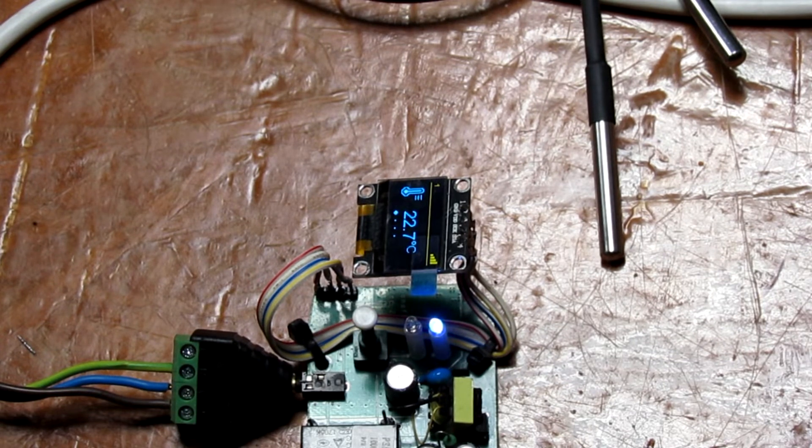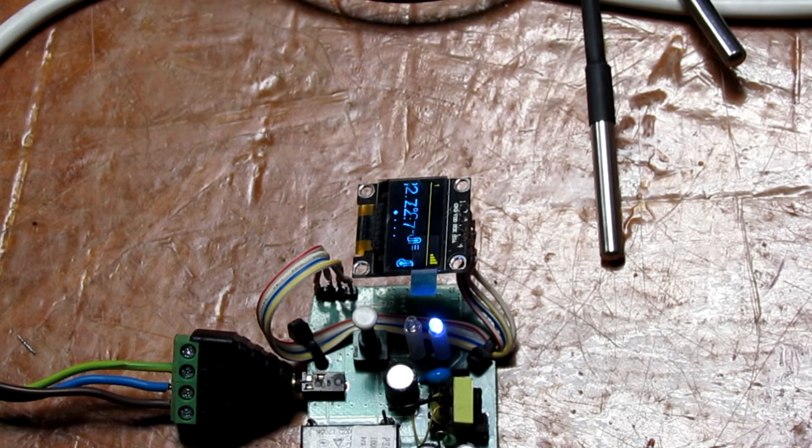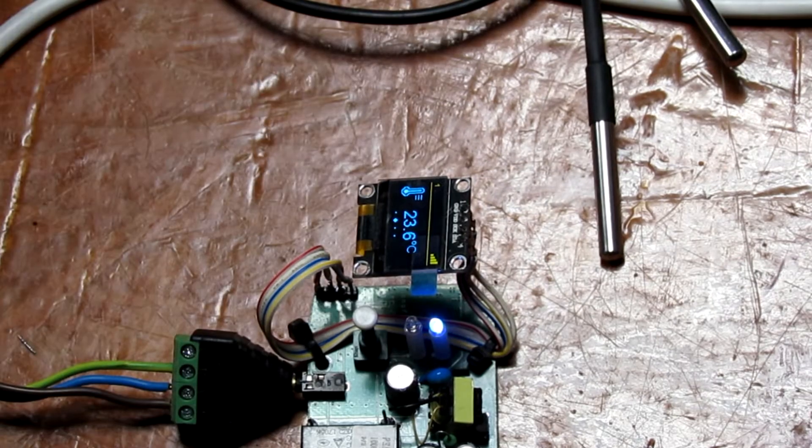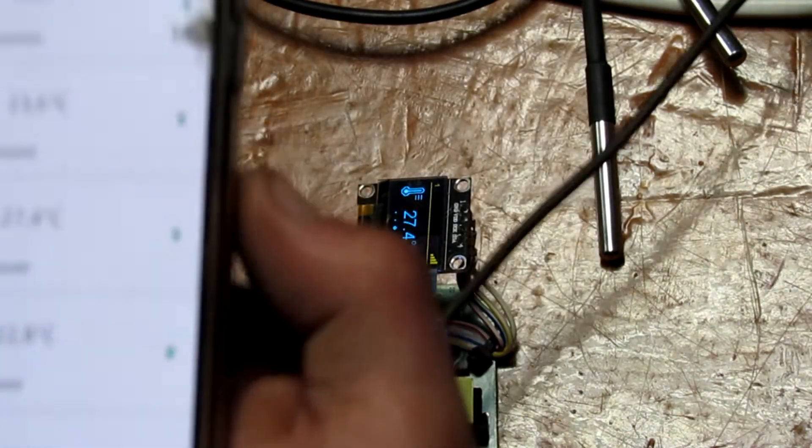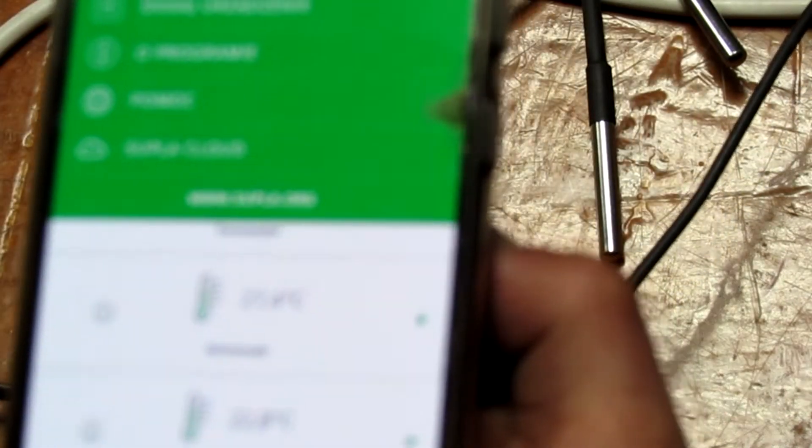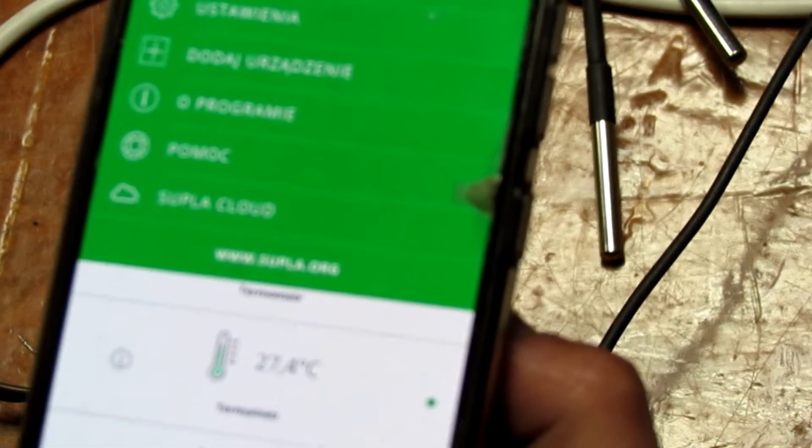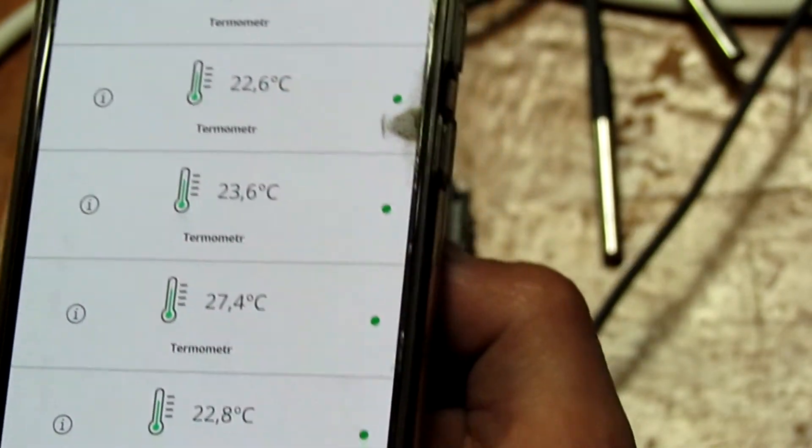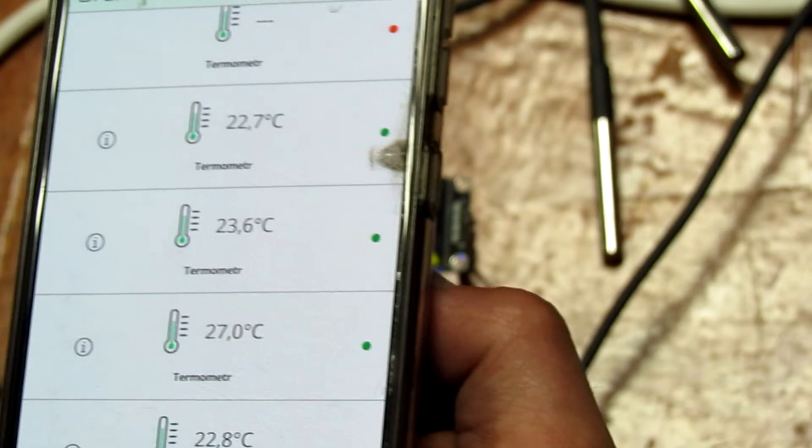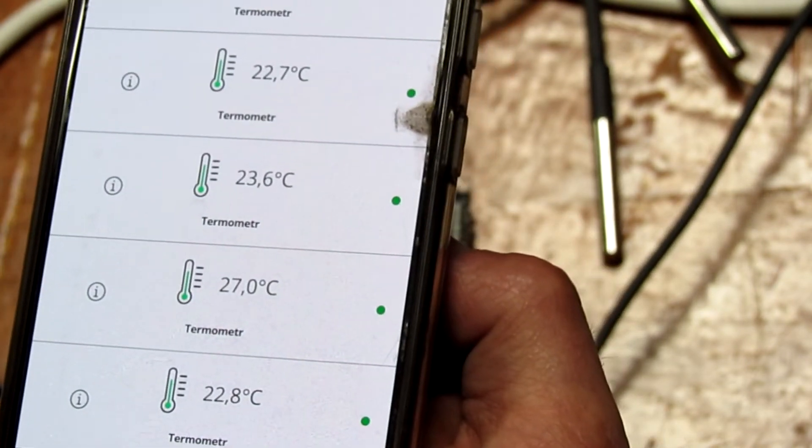Teraz co do telefonu. Zobaczcie, w telefonie tak to wygląda. Cztery pomiary, w ten sposób, cztery czujniki temperatury.